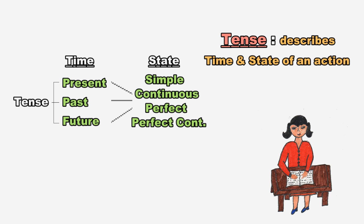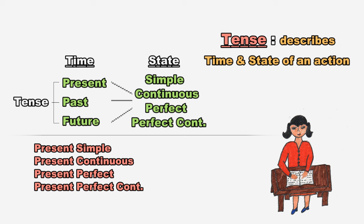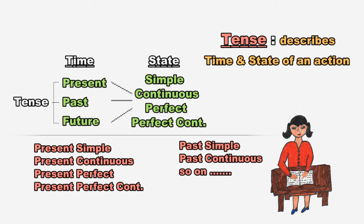Hence, tenses are: present simple tense, present continuous tense, present perfect tense, present perfect continuous tense, past simple tense, past continuous tense, and so on. Ye sabhi tenses different time and state of action ke liye use kiye jaate hain. Hence they use different forms of verb, so they have different structures. Now I will discuss the structure and use of these tenses, and then I will discuss rules related to them.